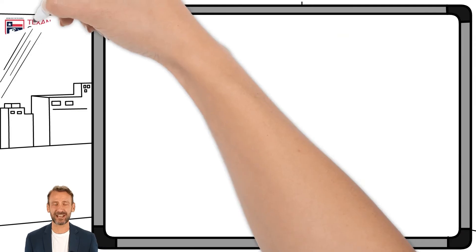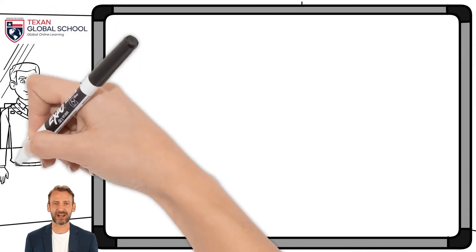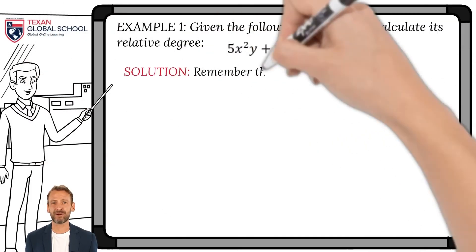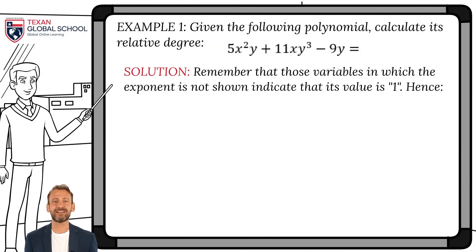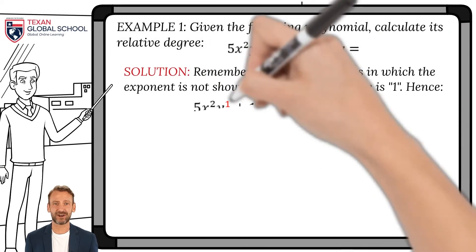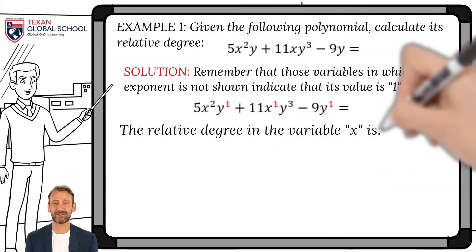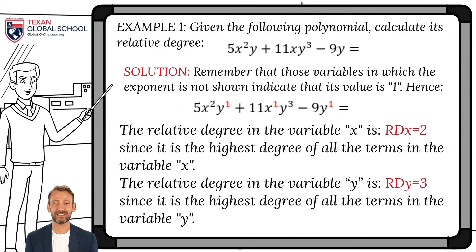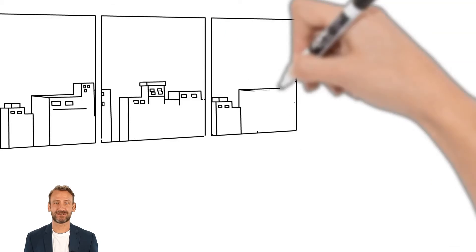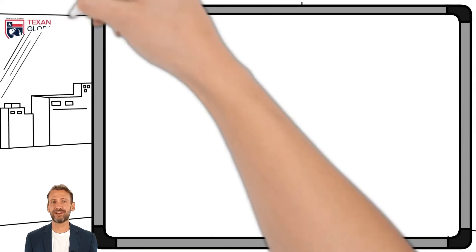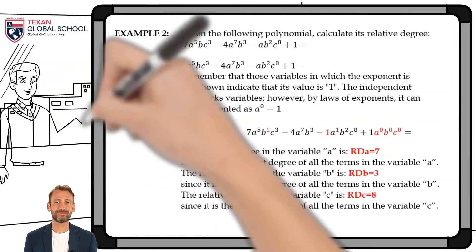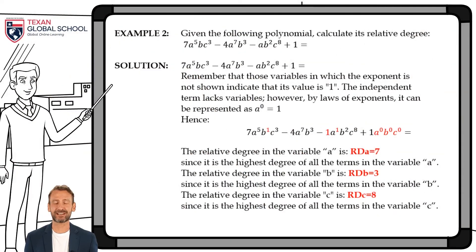In this first example, we will calculate the relative degree of the polynomial by highlighting those variables in which the exponent is not shown with a value of 1. In this way, we can see that the relative degree in the variable x is 2, and in y it is 3, since they are the exponents with the highest value.